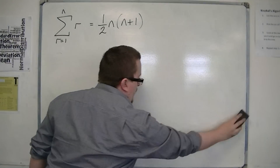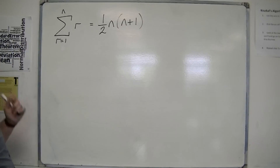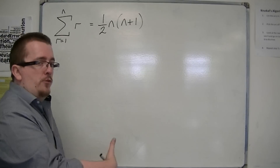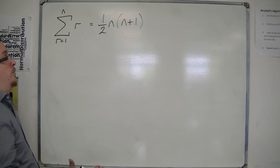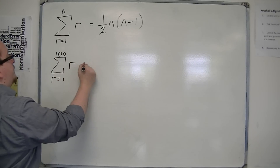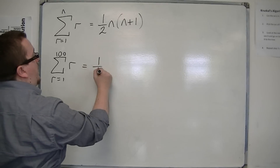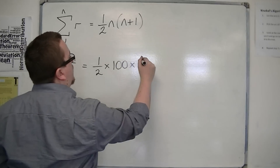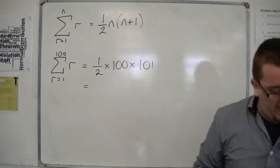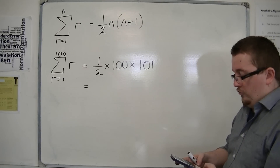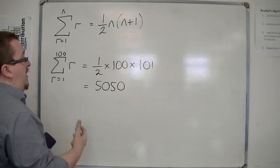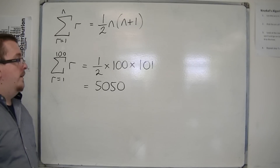If I wanted to find the sum of the first 100 terms — so 1 plus 2 plus 3 plus 4 plus 5 all the way up to 100 — that would be the sum of r from r equals 1 to 100. With n equal to 100, that's one half times 100 times 101, which is 50 times 101, which equals 5050. So the sum of the first 100 numbers is 5050.